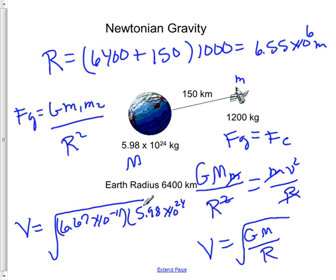Divided by the radius, 6.55 times 10 to the 6. And then solving for velocity, you do get an answer of 7,800 meters per second.